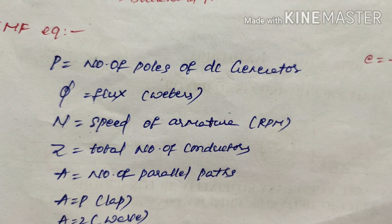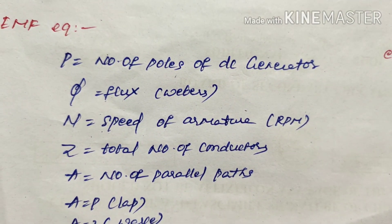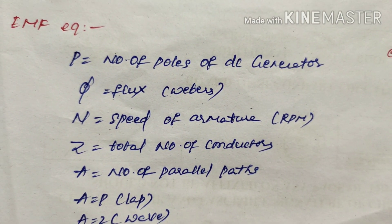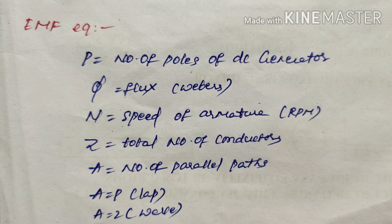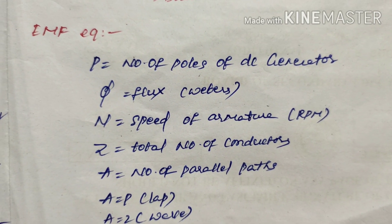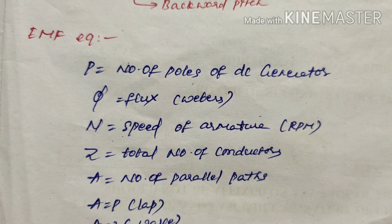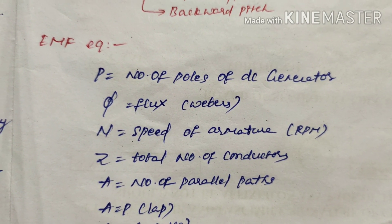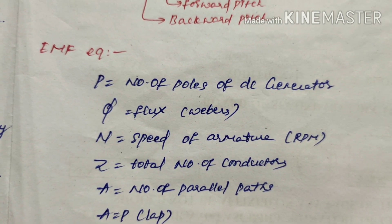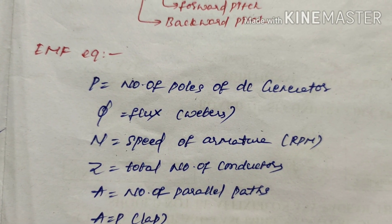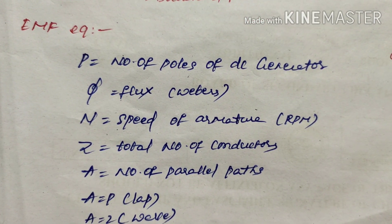Up to now we have completed the construction and principle of the DC generator. The next concept is the EMF equation. EMF stands for electromotive force. Let P be the number of poles, φ (phi) be the flux produced by each pole in webers, N be the speed of the armature, Z be the total number of conductors, and A be the number of parallel paths — where A = P for lap windings and A = 2 for wave windings.